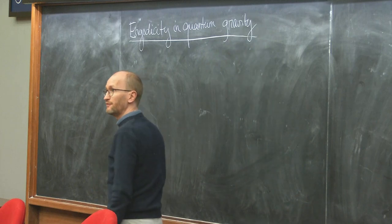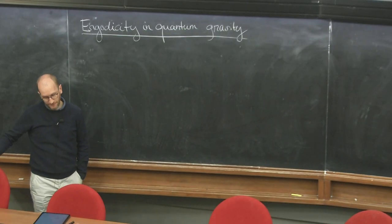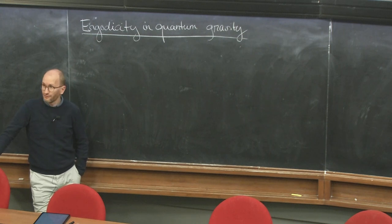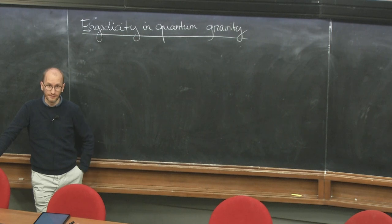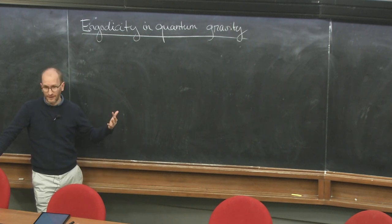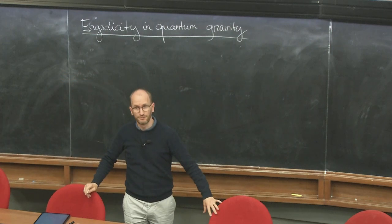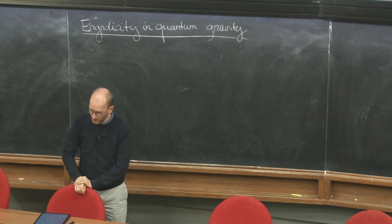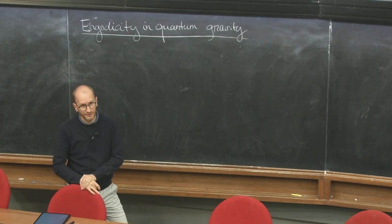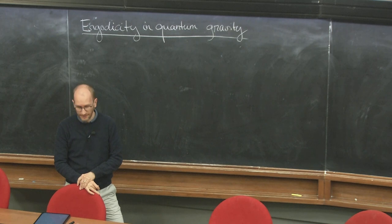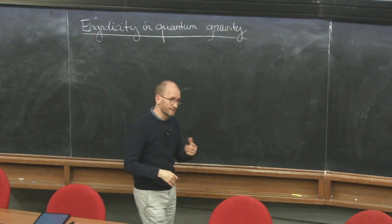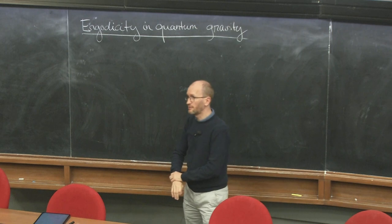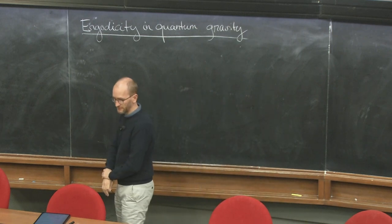Let me recap a couple of points. We've already argued that the ergodic phase — which I defined to be the phase where a random matrix type description starts being useful and appropriate — is actually a very sensitive probe to the structure of the microstate of the underlying theory. In that case, gravity is no exception, and in particular it has non-perturbative sensitivity to the microstates.